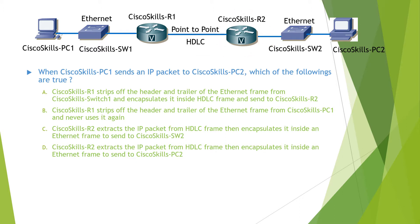When Router 2 receives the HDLC frame, it will de-encapsulate it to get the IP packet and then encapsulate the IP packet into an Ethernet frame and send it to PC2.